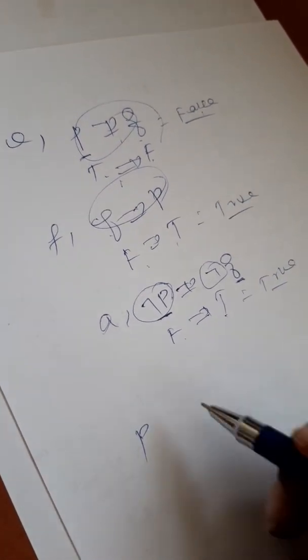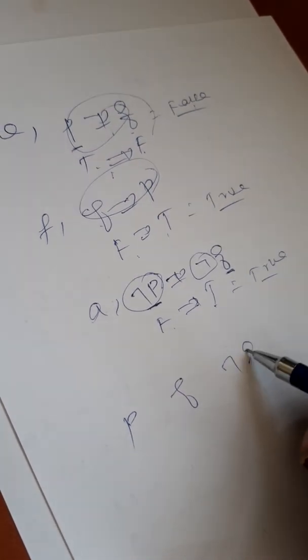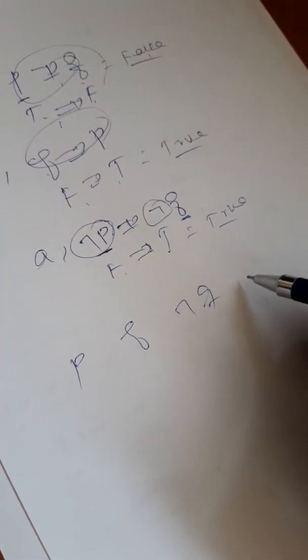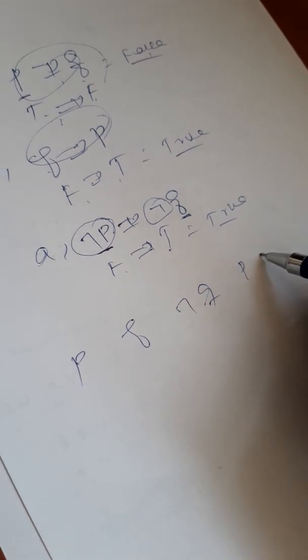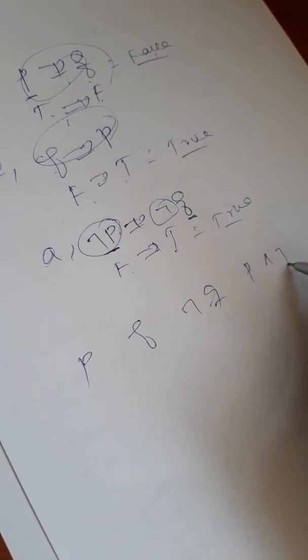Now we have the variables: p, q, negation of q, p and negation of q. Let's work through the truth table for these combinations.